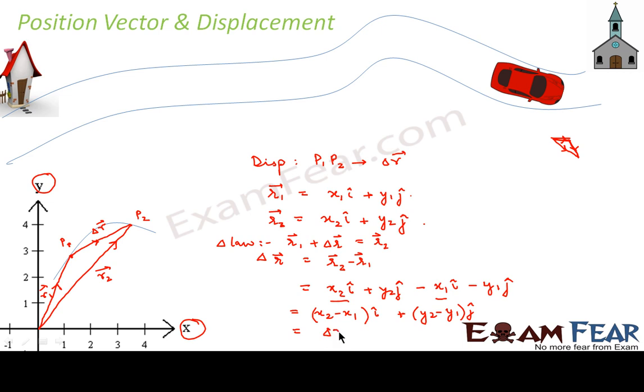So what can you say x2 minus x1? That is nothing but the change in distance. It is the x2 minus x1 represents the change in position along x axis. So we can denote it by delta x. Similarly y2 minus y1 denotes the change in position along y axis which can be denoted as delta y cap and this is equal to displacement.